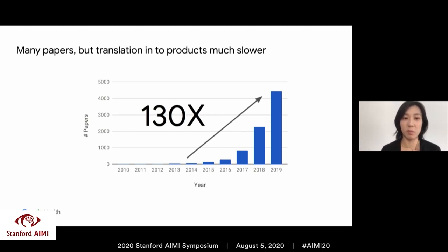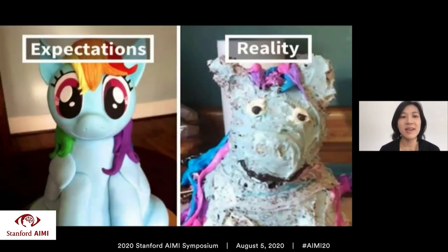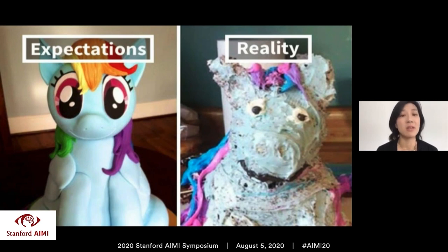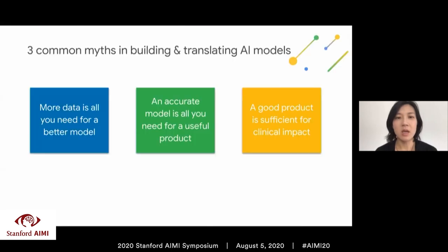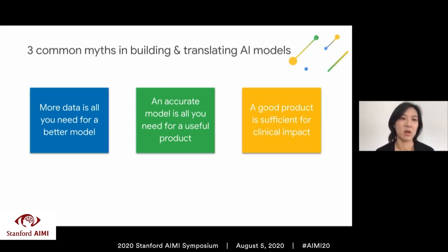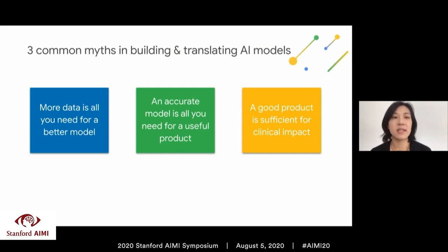Given the adoption of deep learning in consumer products and exciting case studies in healthcare, one would expect a plethora of AI-enabled products in the healthcare space. But translation into product has been quite slow. Why is there this gap between expectations and reality? Translation of AI technologies into healthcare is more challenging than it seems. Today I'll cover three common myths or pitfalls: first, more data is all you need for a better model; second, an accurate model is all you need for a good product; and third, a good product is sufficient for clinical impact.